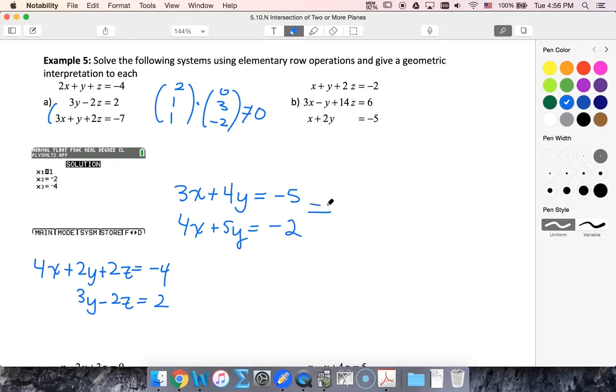Now I could use these two equations and figure out what x and y are. So from these two, I would end up with, let's multiply this by 4, 12x plus 16y is negative 20. Multiply by 3, 12x plus 15y is negative 6. Subtract the two, I would get y is equal to negative 14. And something went wrong because my y value should have been negative 2.